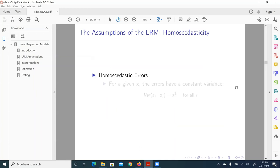Next assumption of linear regression model, or classic least square is homosedasticity. That means we have homosedastic errors. That is for a given x, the errors have a consistent variance.